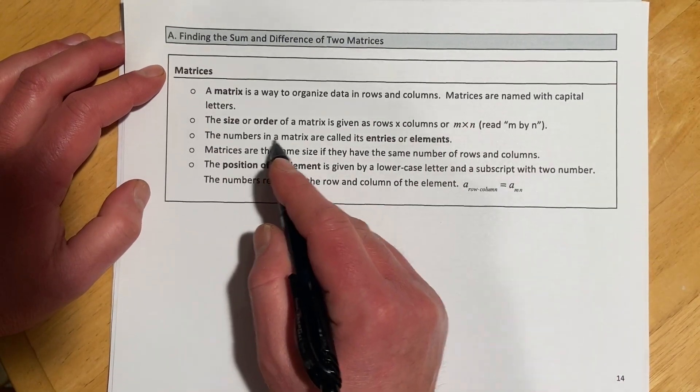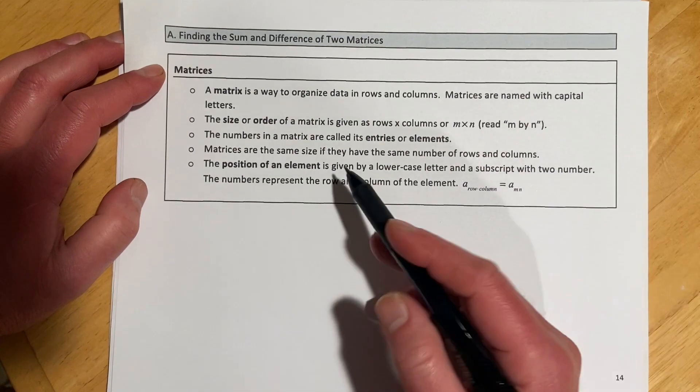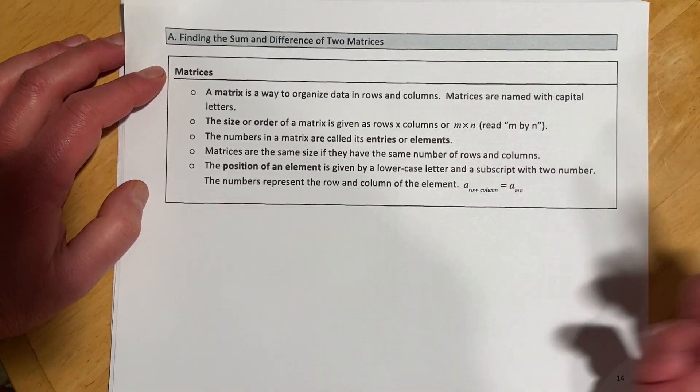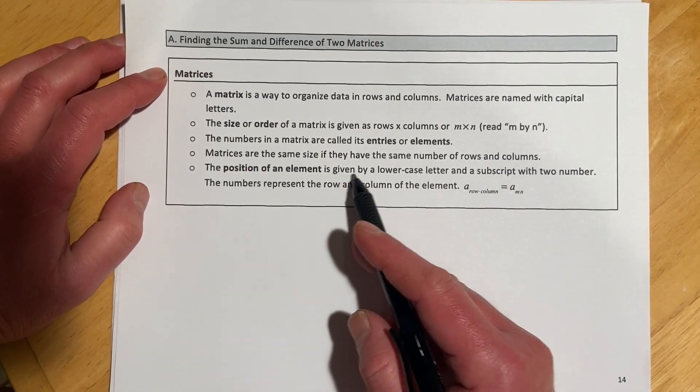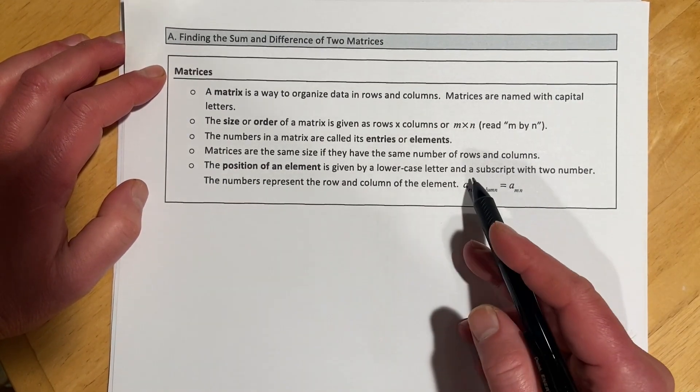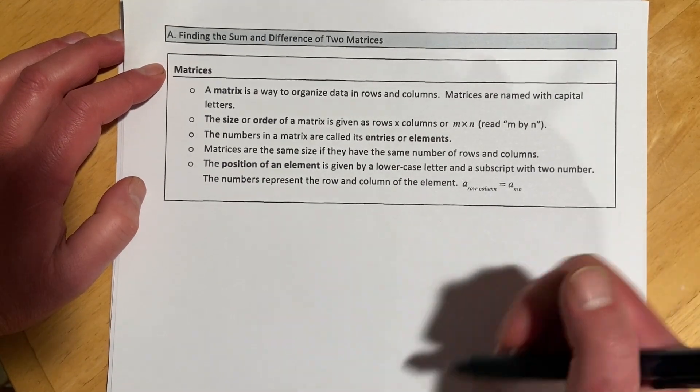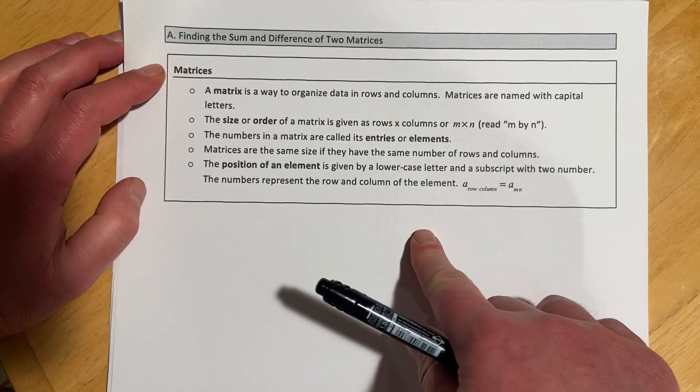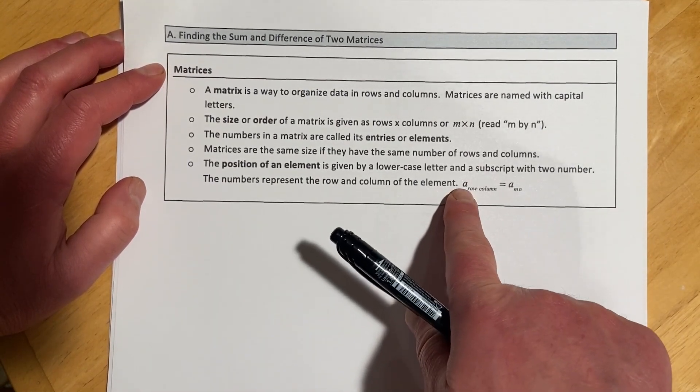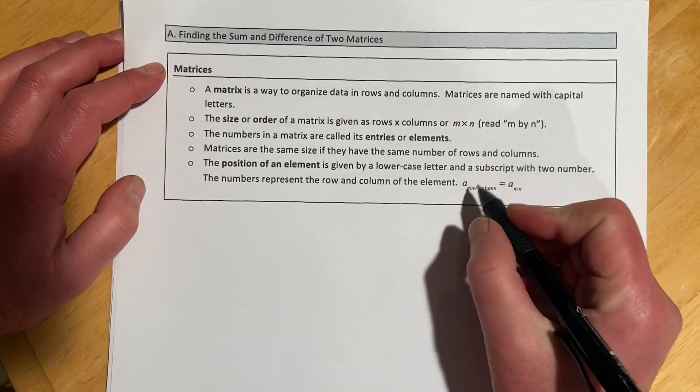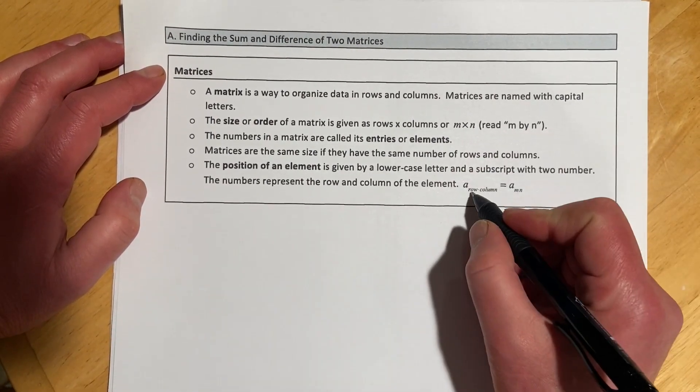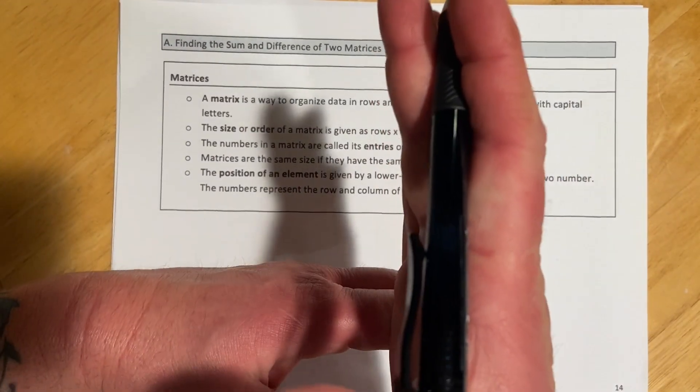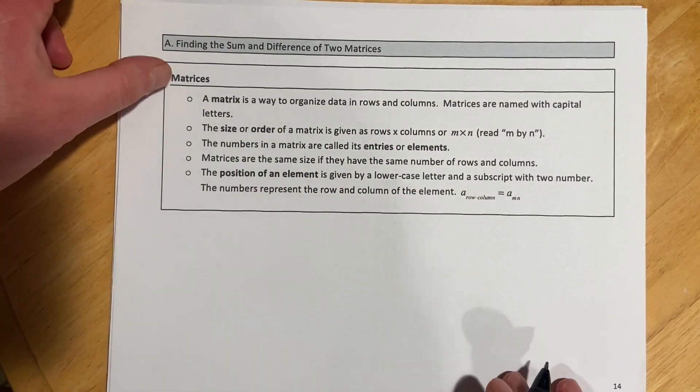The numbers in the matrix are called entries or elements. Matrices are the same size if they have the same number of rows and columns. That makes sense. And then the position of an element is given by a lowercase letter and a subscript with two numbers. So if we're talking about an element in the matrix, like one of the little numbers, it's denoted with this lowercase letter and then row columns, so like which row it's in and then which column. So kind of lining those up and figuring out where the element is. And I'll show all those with an example here.